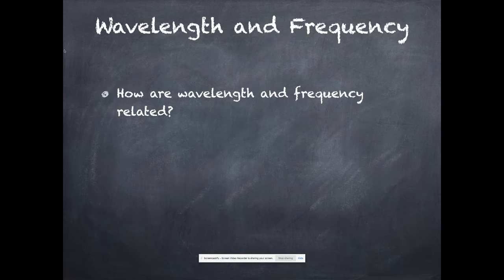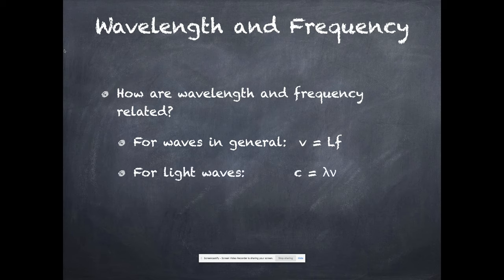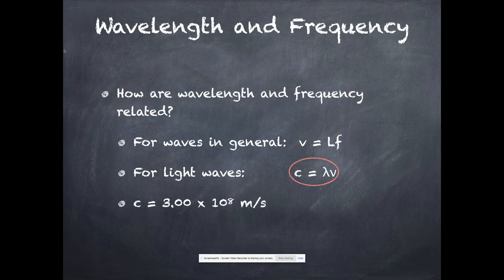Now, wavelength and frequency are related to each other. In general in physics class, we say the velocity of a wave equals its wavelength times its frequency, V equals LF. But we use specific symbols when we're talking about light. We say C equals lambda nu. That's the equation for today.